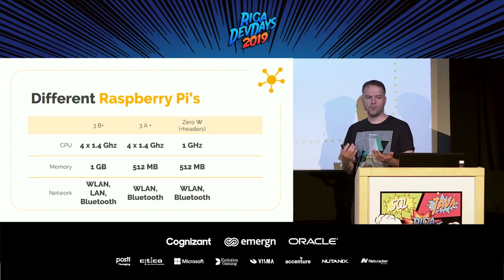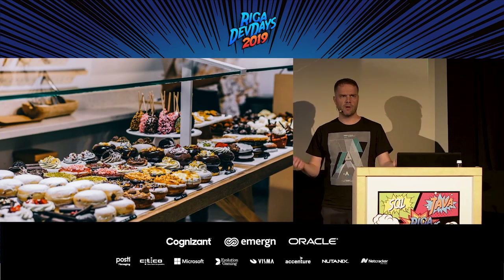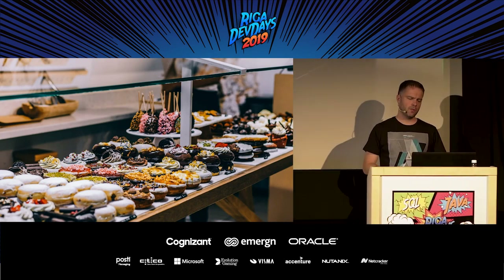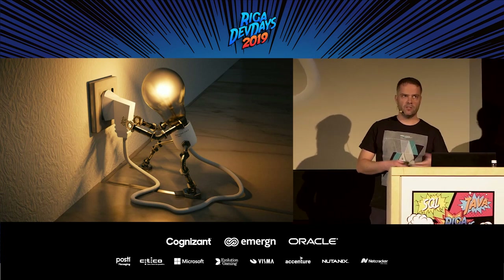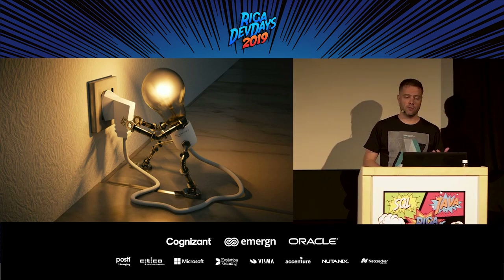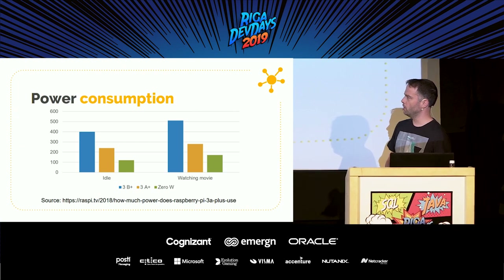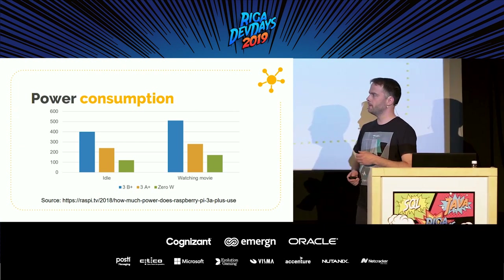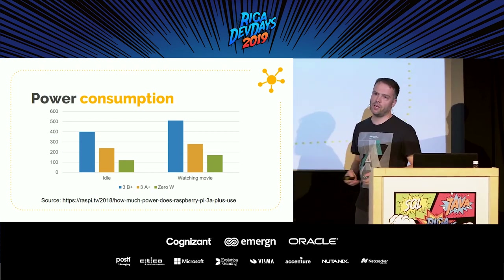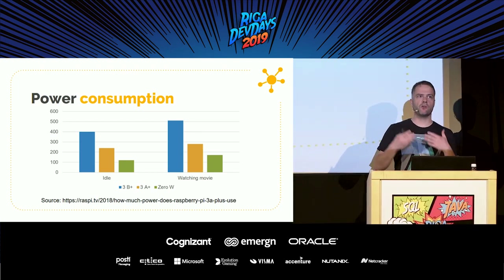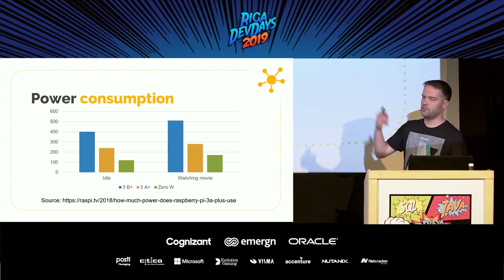Nowadays, you have a lot of Raspberry Pis — which one should you pick? There are quite some differences between them: different features, some bigger, some smaller, some with Ethernet, some more expensive. One thing that can be interesting, especially if you want to run them on a battery, is the power consumption — the 0W consumes one third of the power of a 3B+. I'm using the 3B+ because I also use it to run Docker with my database and everything on it, so it's better to have a few more cores.